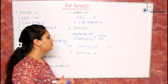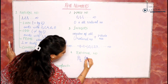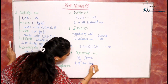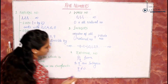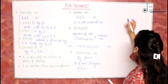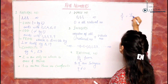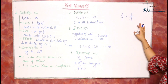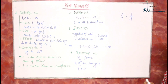After that we have rational numbers. A rational number is a number which can be represented in P by Q form, whereas P and Q are integers and Q cannot be equal to 0. For example, 3 by 7 or minus 2 upon 19 — these are numbers in P by Q form where the denominator Q is not equal to 0.